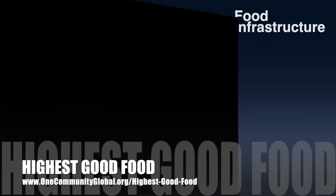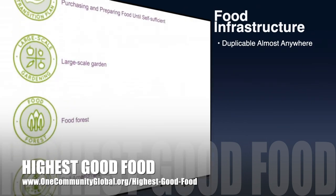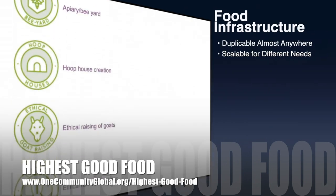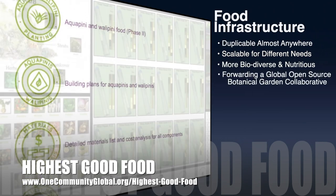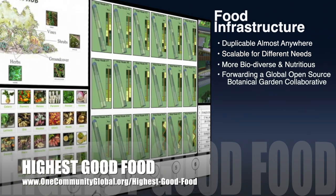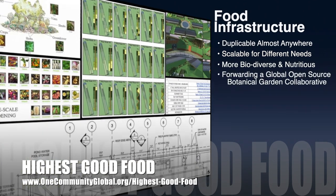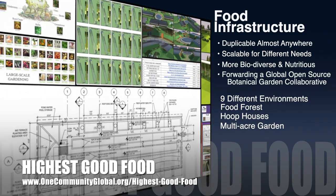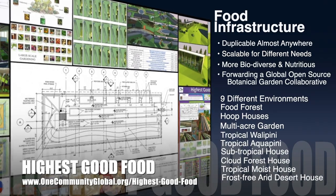One Community's approach to highest good food is duplicable almost anywhere, scalable for different needs, more biodiverse and nutritious, part of forwarding a global open-source botanical garden collaborative, and includes nine different free-shared and duplicable growing environments.